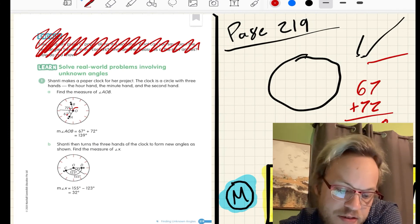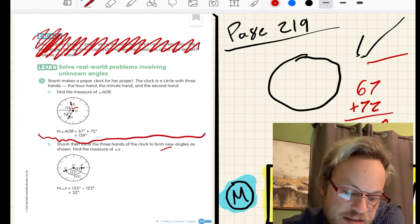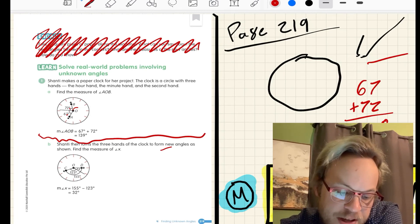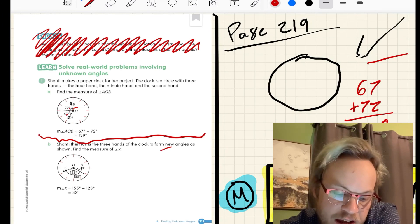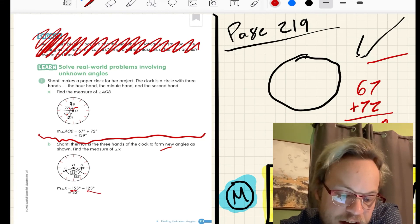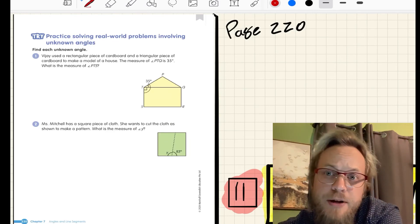Shanti then turns the three hands of the clock to form a new angle. This is separate. It is a new angle that we're looking at. And we need to find the measure of X. The angle stayed the same, but she changed where the second hand is. So now we're taking our total of 155 minus 123 to find X equals 32 degrees. It's modeled there on page 219 for you.